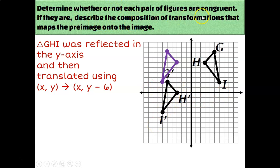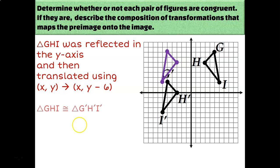You'll notice there's a second part of the directions: determine whether or not the figures are congruent. Really all that's asking is, based on what kind of transformations you just performed, are they isometric or not? Isometric transformations are the ones that maintain your side lengths and your angle measures, parallel and perpendicular lines — all the good stuff. Translations, reflections, and rotations are isometric transformations. So as long as those are the types of transformations you're using to get from the pre-image to the image, you can conclude that the two triangles must be congruent to each other.